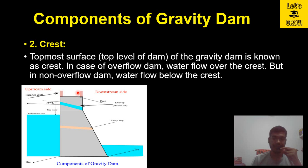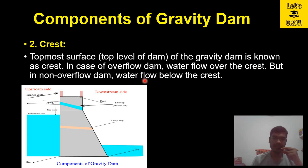The second component is the crest. The topmost surface or top level of a gravity dam is known as the crest. In the case of an overflow dam, water flows over the crest, but in a non-overflow dam, water does not flow over the crest. Here, this is the topmost surface of the dam.